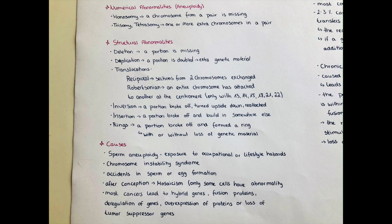Structural abnormalities can also be of different kinds. For example, deletion, where a portion of a chromosome is missing. And duplication, where a portion is doubled, so there will be extra genetic material.